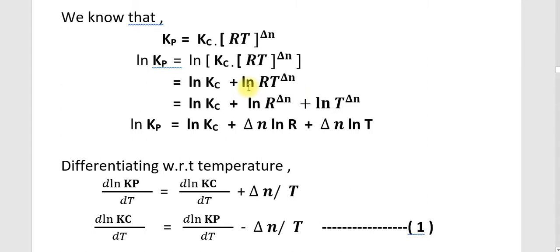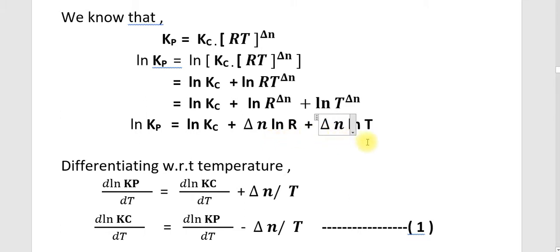After that, using the property log A raised to X equals X log A, the expression becomes: Ln Kp equals Ln Kc plus delta N times Ln R plus delta N times Ln T.